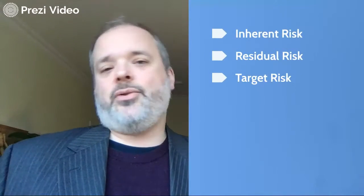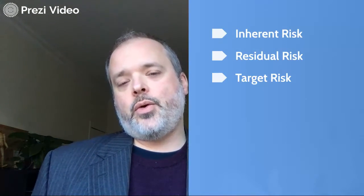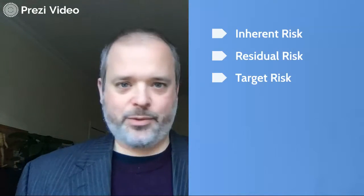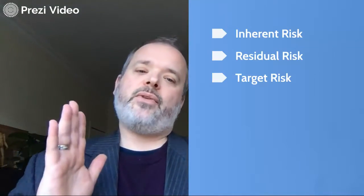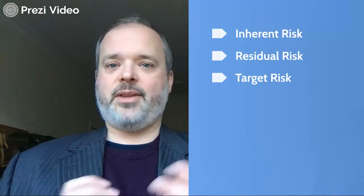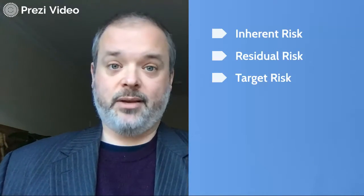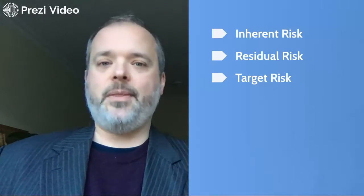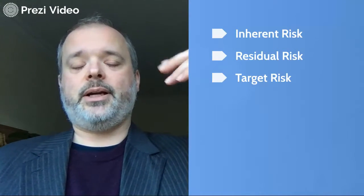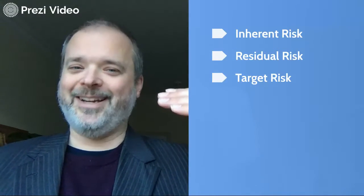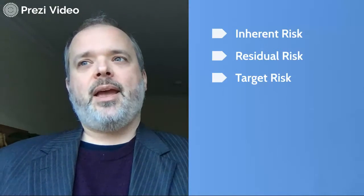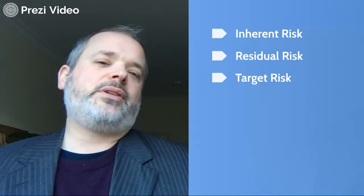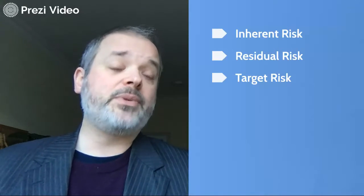This brings us to the last point: things you can do to improve your risk register by adding the notion of target risk. In your normal risk register — and almost every risk register I've ever seen — you have an inherent risk, which is the risk this thing represents if you don't do anything. Then you have your residual risk, which is what happens after you've treated it and done things to lower the risk. Hopefully the residual risk is lower. But almost every single risk register I've ever seen in my career stops there.